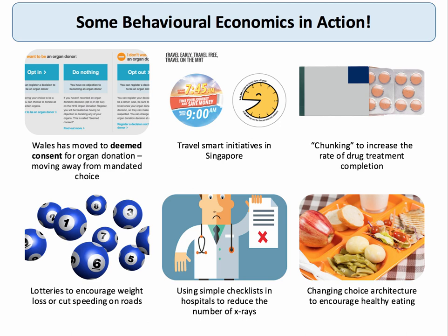Here are some examples of behavioral nudges in action. In Wales they've moved towards deemed consent for organ donation — mandated choice. If you haven't recorded an organ donation decision on the NHS organ donation register, then in Wales you're now treated as having no objection to donating any of your organs. A really good example of a travel smart initiative in Singapore: if you travel before 7:45am or after 9 o'clock — in other words, outside of the rush hours — you get a cheaper fare and also can be entered into a lottery to win some money.